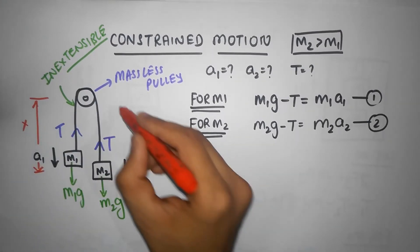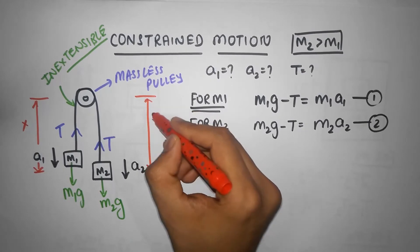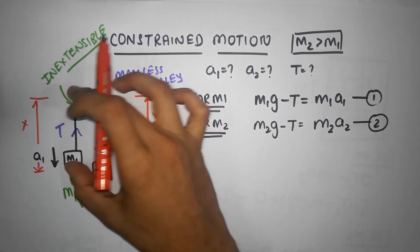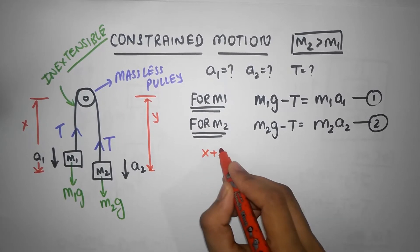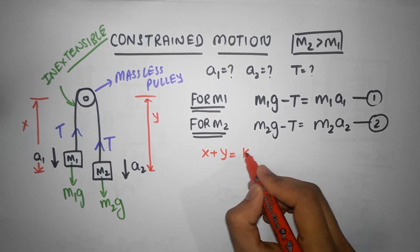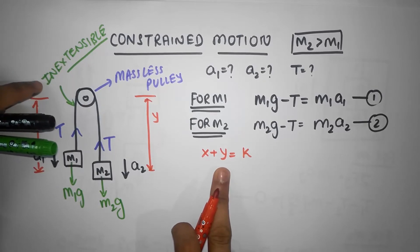And let's consider this part of the string as y. So x is this length of the string and y is that length of the string. So we know that x plus y is a constant, regardless of what happens, because it directly comes from the constraint equation. Inextensible.